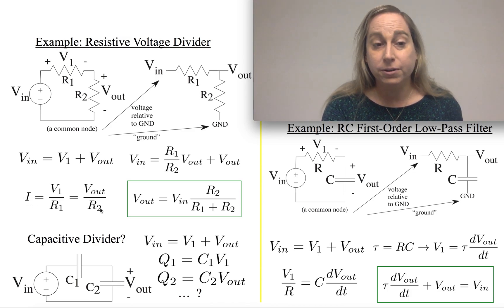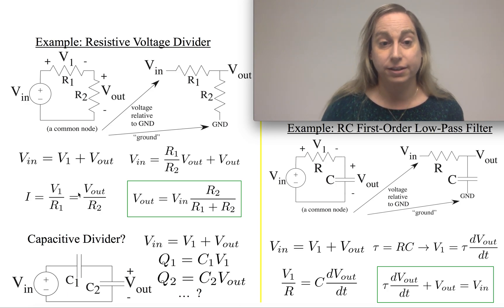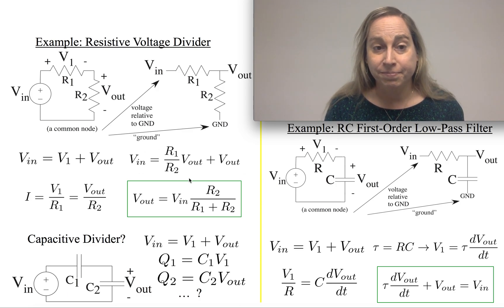That current is the same for both. So notice I have a proportionality here. I can say that V1, which shows up here, could just be R1 over R2 times Vout. Substituting in, I get a relationship between Vin and Vout. Doing a little bit of algebra, I find that Vout is equal to Vin times R2 over the sum of the two resistors.